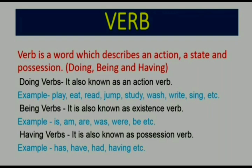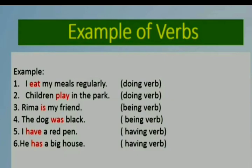Now let's look at examples for each verb type. 'I eat my meals regularly' — here 'eat' is a doing verb. 'Children play in the park' — 'play' is a doing verb. 'Rima is my friend' — 'is' is a being verb. 'The dog was black' — 'was' is a being verb. 'I have a red pen' — 'have' is a having verb. 'He has a big house' — 'has' is a having verb.